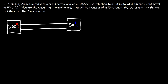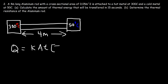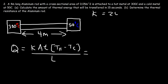Problem 2: a 4-meter long aluminum rod with a cross-sectional area of 0.05 square meters is attached to a hot metal at 300°C and a cold metal at 50°C. Calculate the amount of thermal energy transferred in 15 seconds. Q equals thermal conductivity times area times time times the temperature difference divided by the length. The thermal conductivity of aluminum is 205 watts per meter per Celsius.